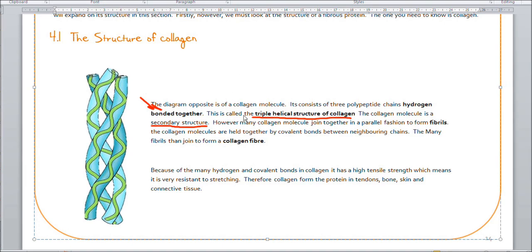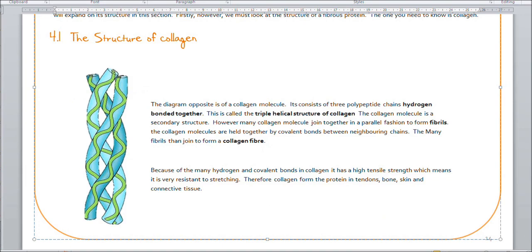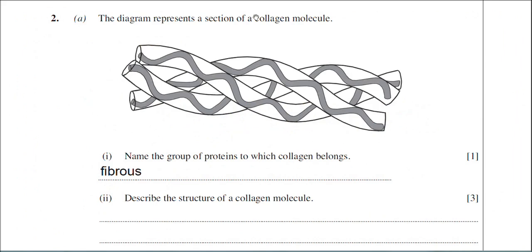Each polypeptide chain is a helical structure — there's one helix there, there's another one, and that's the third. The collagen molecule does actually join together to form a fibril, and many fibrils join together to form a collagen fibre. So the diagram in the exam paper is of a collagen molecule, as stated in the question.